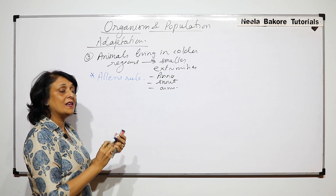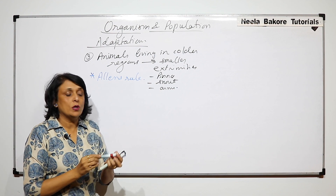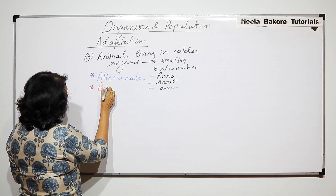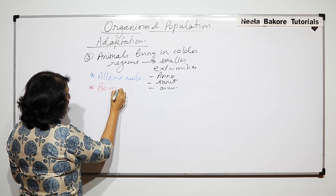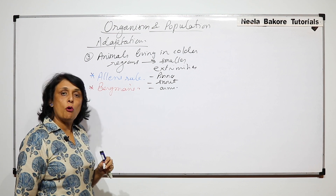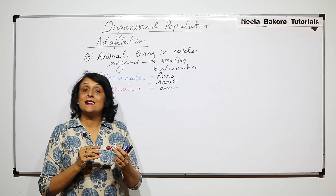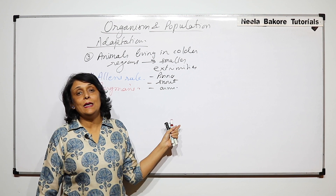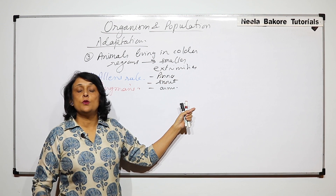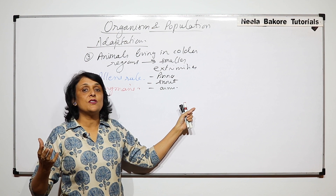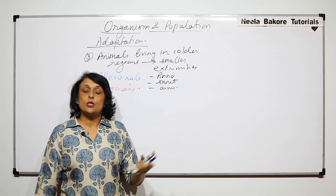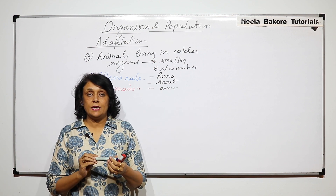A similar rule was given by another scientist and it is known as Bergman's rule. Both tell us the same thing: that animals living in warmer regions would have bigger extremities, and animals living in colder regions would have smaller extremities.